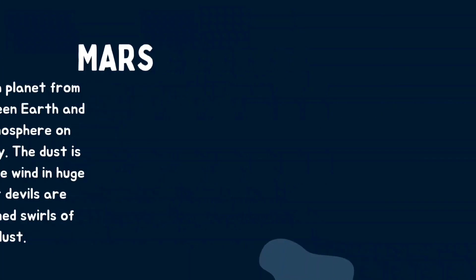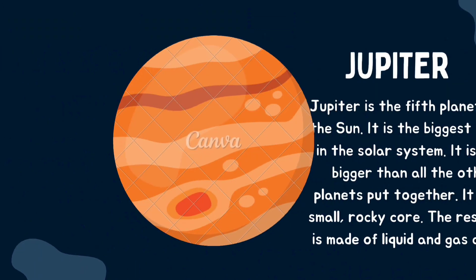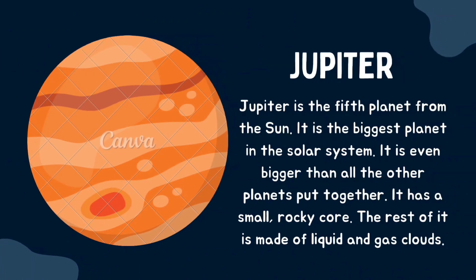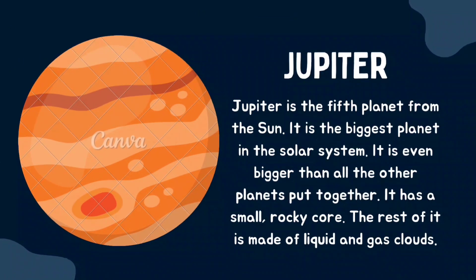Now let's move on to the next planet, Jupiter. Jupiter is the fifth planet from the sun and the biggest planet in the solar system. It is even bigger than all the other planets put together. It has a small rocky core, and the rest of it is made of liquid and gas clouds.